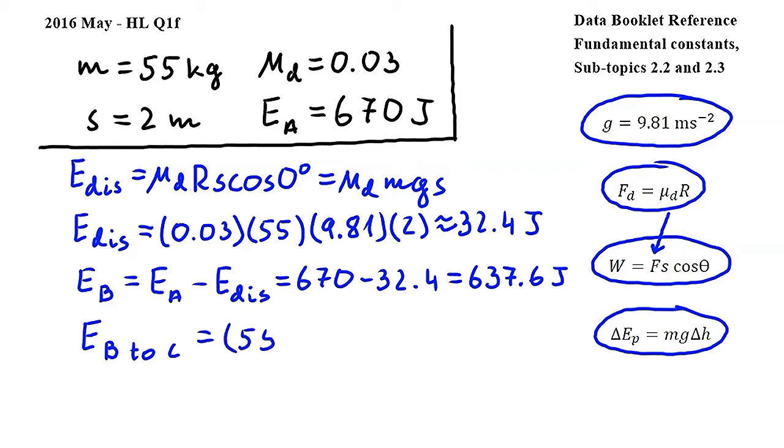Substituting, we get 55 times 9.81 multiplied by 1.2, which gives us approximately 647.5 joules. So this is the energy needed for the block to move from point B to point C. From our calculations we can see that the energy needed to move from B to C, so 647.5, is larger than the energy that the block has at B, so 637.6.